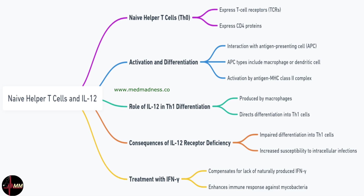Now, if there's a deficiency in IL-12 receptors, these naive T cells cannot become Th1 cells. This means less IFN-γ is produced, leading to a weakened response against intracellular organisms.